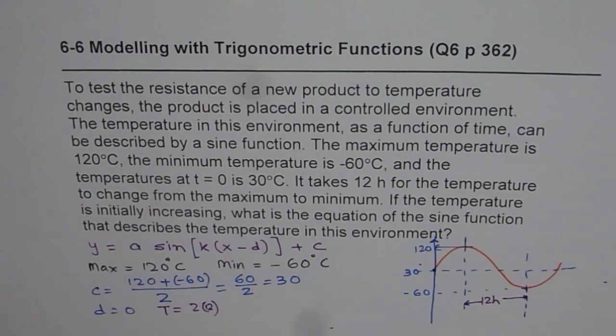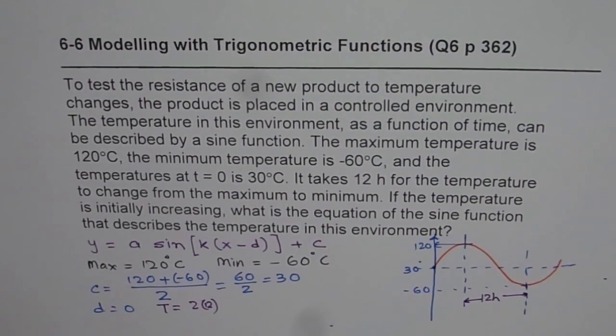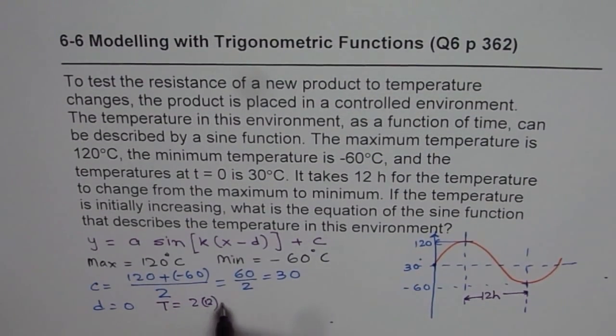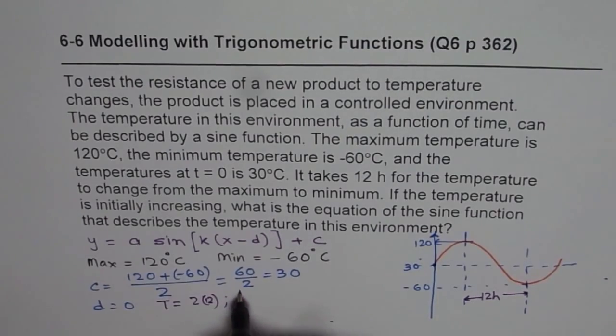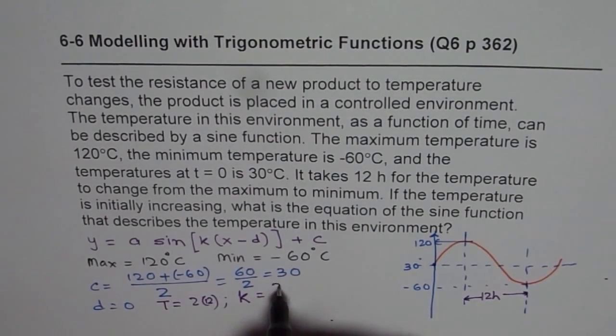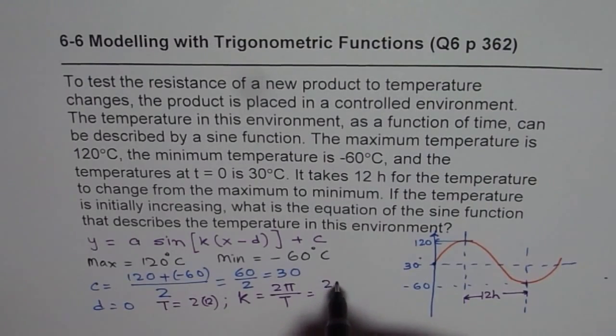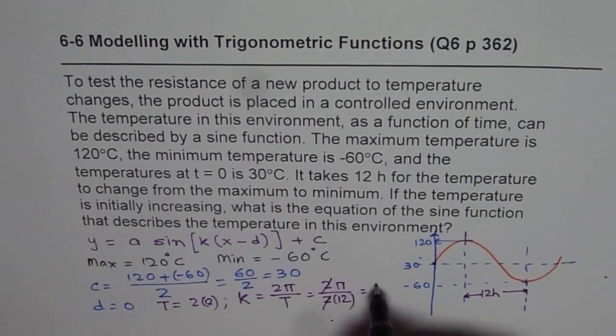Once we know time period, I am running out of space so I will just squeeze in the equation here itself. Once we know the time period, we can find the value of k, which is 2π by T. In our case, it is 2π by 2 times 12. So we get k as π by 12.